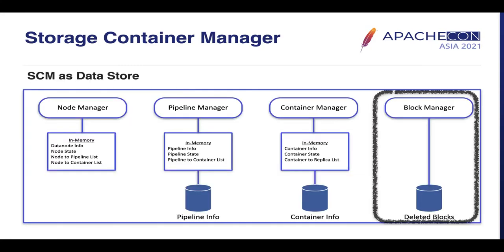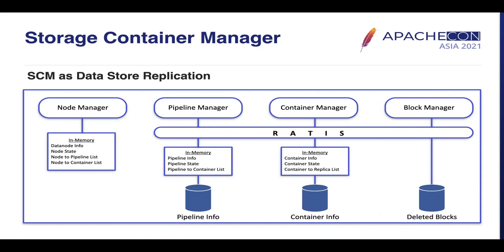Block Manager is responsible for allocation and deletion of blocks. SCM does not store block-level information in any database — Block Manager only maintains blocks that are marked for deletion but not yet deleted. Once a block is deleted, the information is removed from Block Manager. Pending blocks for deletion are stored in a deleted blocks table in RocksDB. In SCM HA, the deleted blocks table is replicated via RATIS and stored in all SCMs. SCM HA uses RATIS to replicate pipeline, container, and block-level information from leader to followers, stored in RocksDB. Node-level information is not replicated — it is updated using data node reports sent to all SCMs.